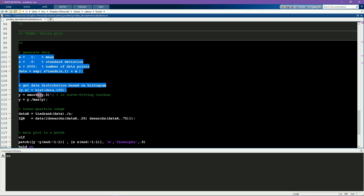Here I compute the histogram of the data. The function smooth is in the curve fitting toolbox. If you don't have that toolbox, you can just comment out this line. It's not necessary. It just applies a bit of smoothing.